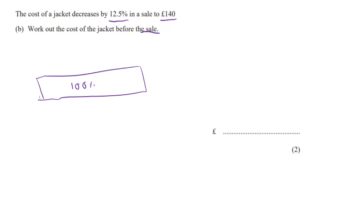So this block here represents 100% of the coat. So this is the cost of the coat before the sale. And then the coat gets put on sale and it gets decreased by 12.5%. So this bit here can be my 12.5%. And so this remaining percentage must be 100% take away 12.5%, which is 87.5%.